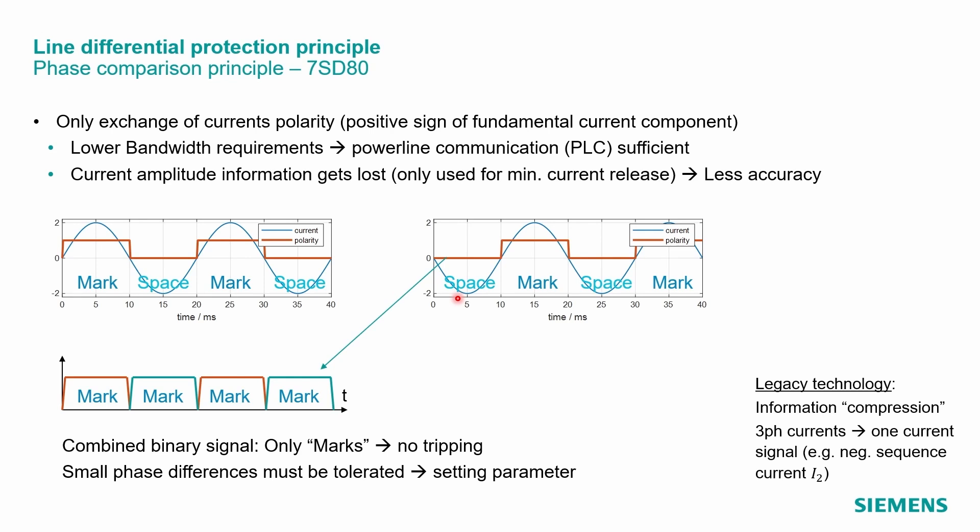The local binary sequence of marks and spaces is combined with the received binary information, as shown here. The combined binary signal only contains marks for the external fault. And this does not lead to a trip condition. Small gaps due to phase errors must be tolerated and stabilized by some settings.